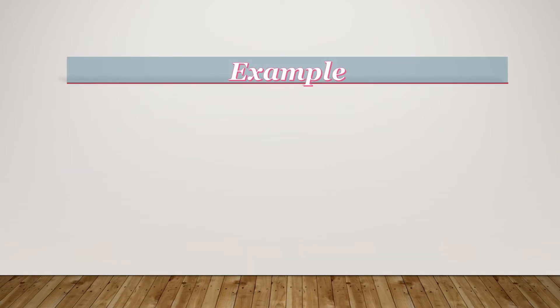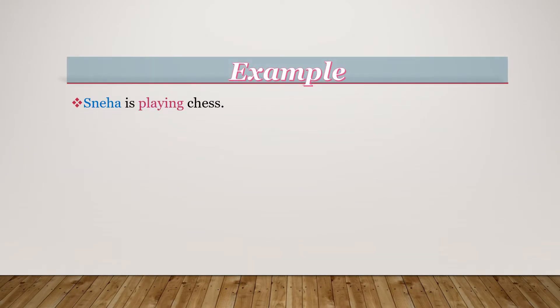Now, see some examples. First: Sneha is playing chess. So, who is performing? Sneha is performing. So, Sneha is the subject. And what is performed by the subject? That is play. So, play is the verb.